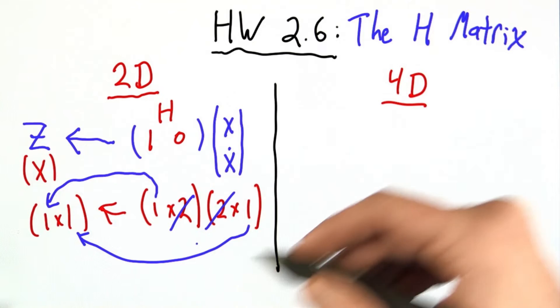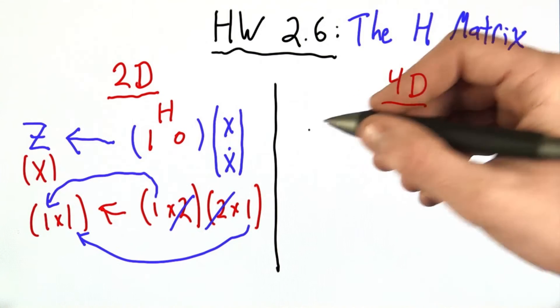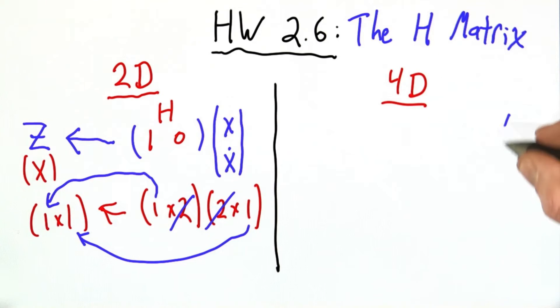Now, let's see if we can generalize that to the 4 dimensional case as presented in the homework. Well, in the 4 dimensional case, our state is now given by x, y, x dot, y dot.